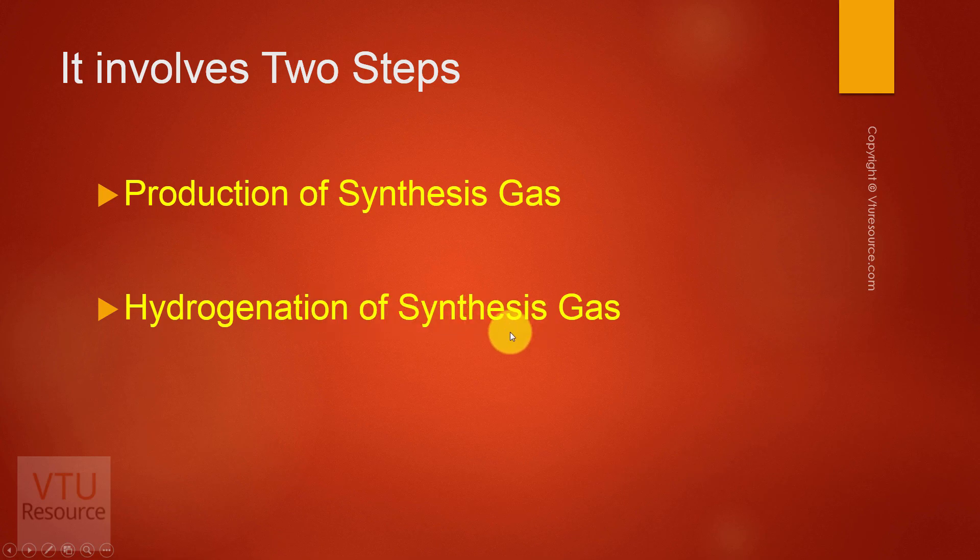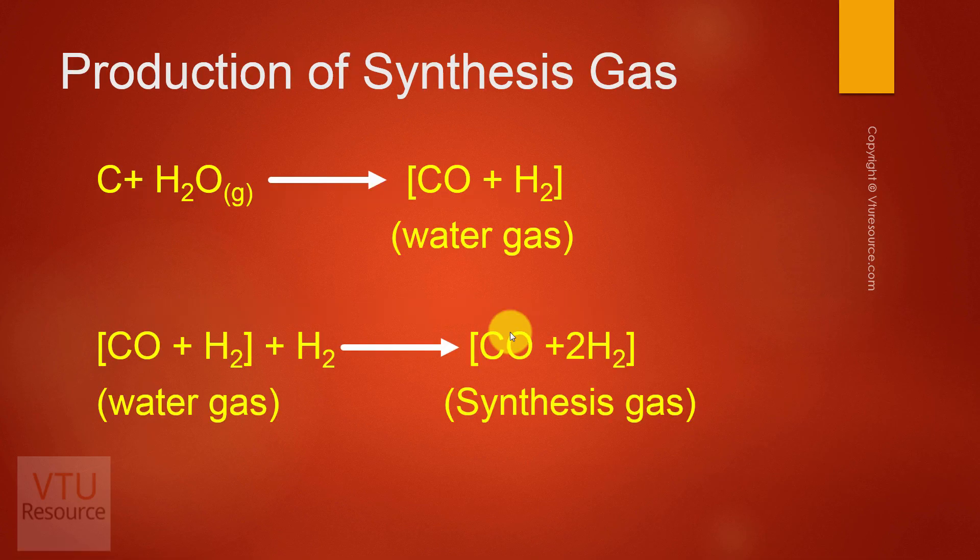Let us see how to synthesize the synthesis gas. In order to produce synthesis gas, Fischer and Tropsch took red hot coal and passed steam to obtain water gas. The water gas was then hydrogenated to obtain synthesis gas. Synthesis gas is CO plus 2H2.